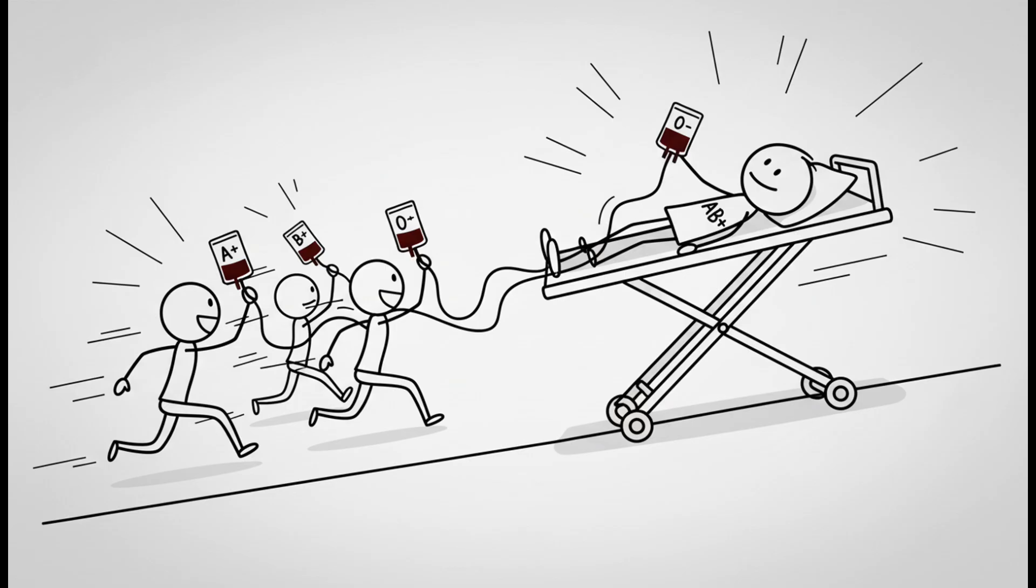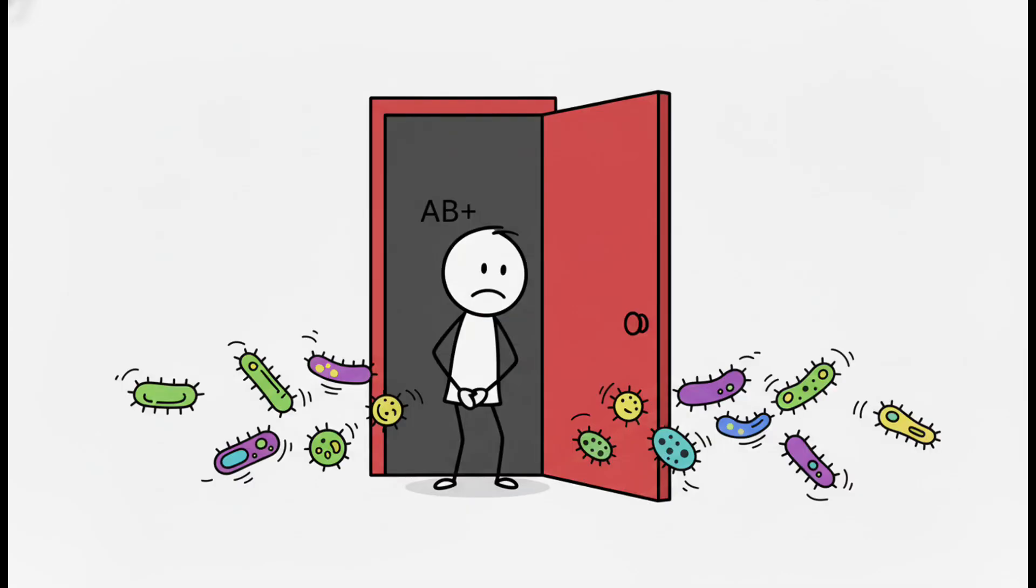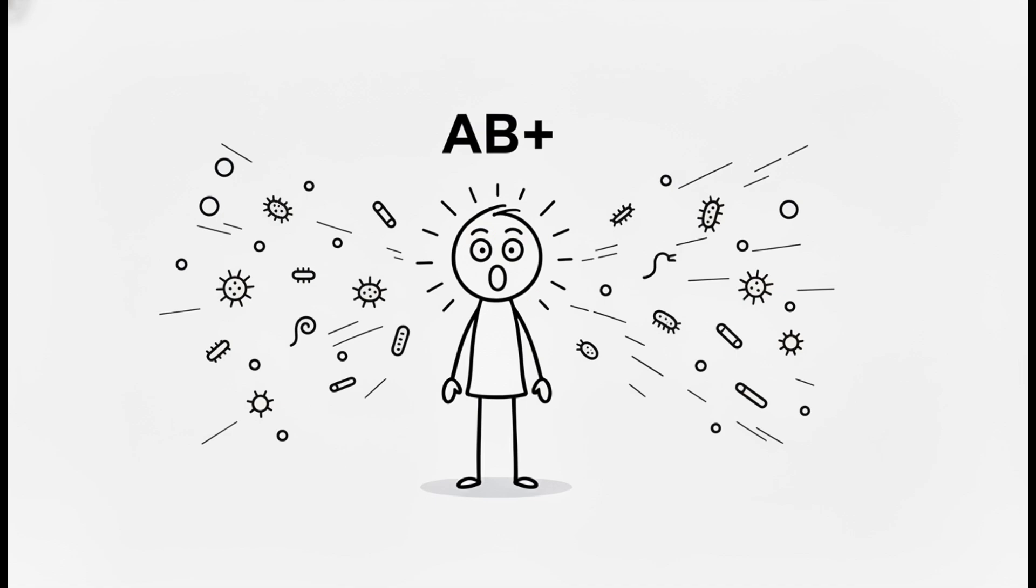In an emergency, you can receive blood from anyone – A, B, AB, O – positive or negative. It's the ultimate biological safety net. But that openness is also your greatest weakness. Because your immune system doesn't fight A or B antigens, it can be too tolerant.